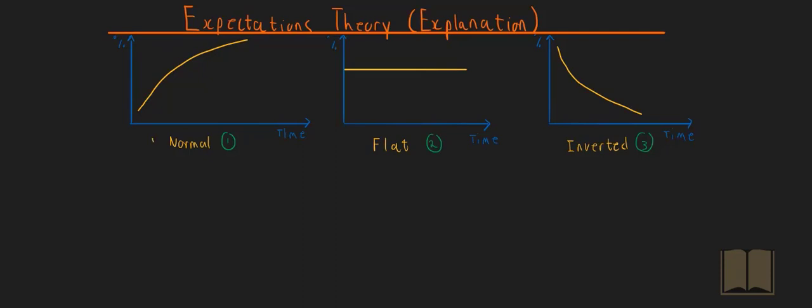Let's explain how the expectations theory works in relation to a normal yield curve. Let's say an investor has a five-year investment horizon. For this five-year horizon, the investor can choose between two types of investment.